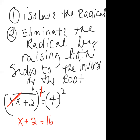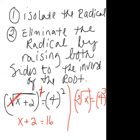If the problem had been the cube root of x equals 4, you raise both sides to the third power — its inverse — to eliminate the cube root. The power eliminates the root, leaving whatever's inside, and on the right side 4 cubed gives you 64.